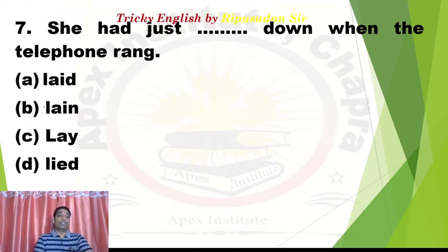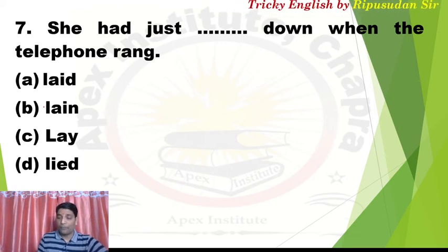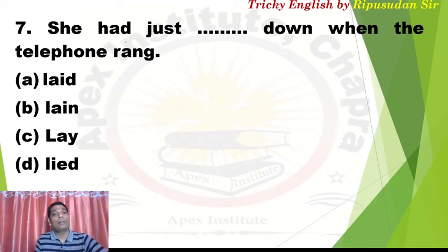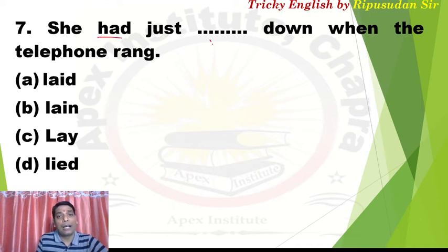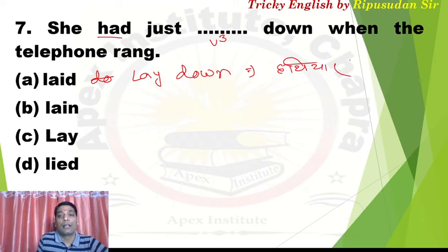Question 7: 'She had just dashed down when the telephone rang.' When the telephone rang, she had just done a dash. Note 'had' is there, so we need to give V3. Now which word goes with 'down'? 'Laid' — but if we attach 'lay down', that is used in the sense of laying down weapons — 'lay down arms', meaning to surrender weapons.